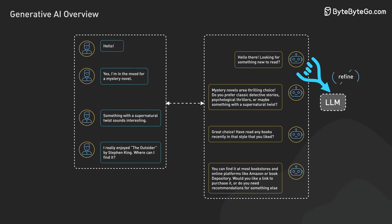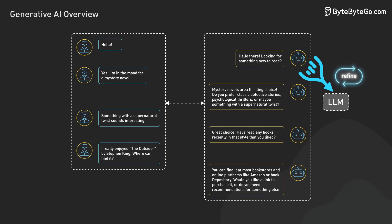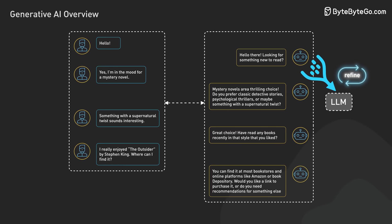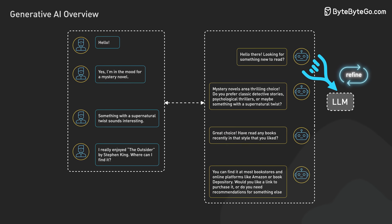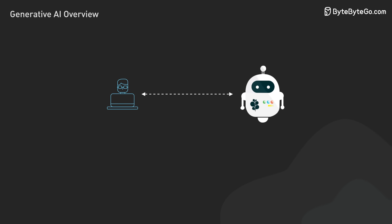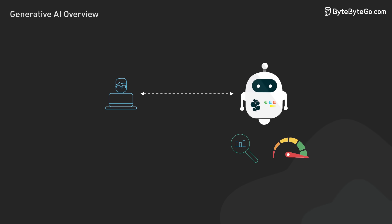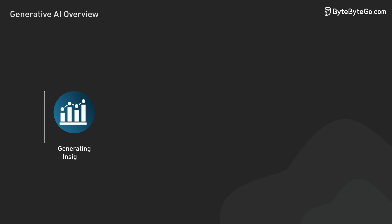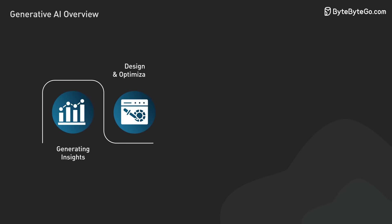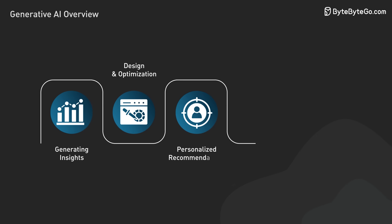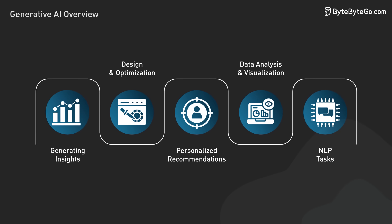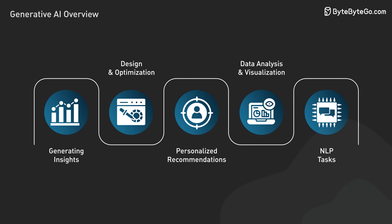After processing and displaying the recommendations, we'll refine the chatbot based on user feedback. Finally, we'll deploy the application and set up monitoring to track performance and user interactions. This process showcases how we can leverage Gen AI to create intelligent, personalized applications that provide value in specific domains.